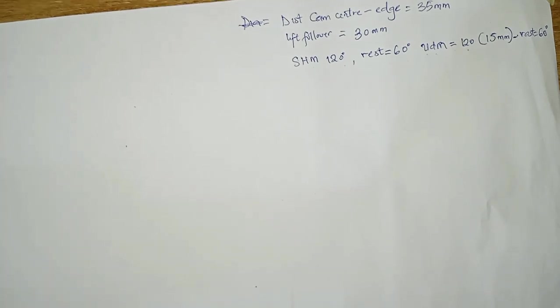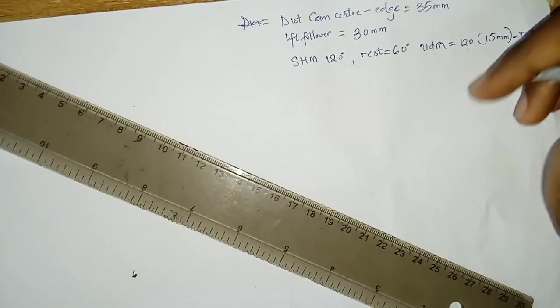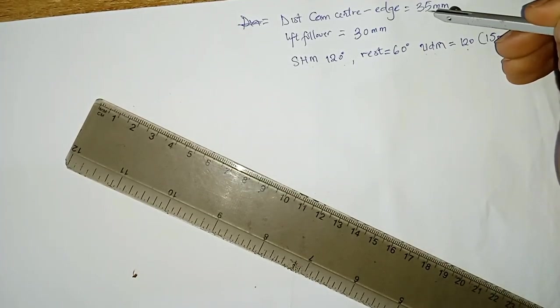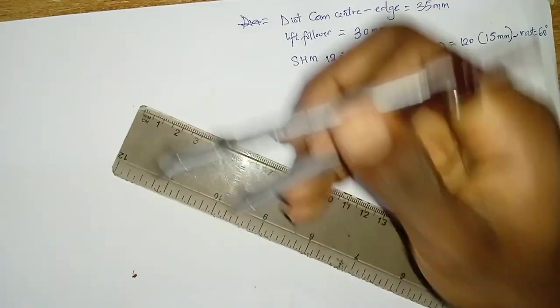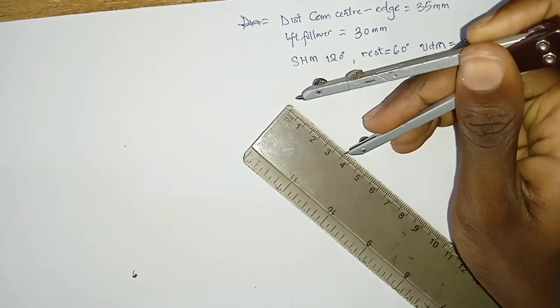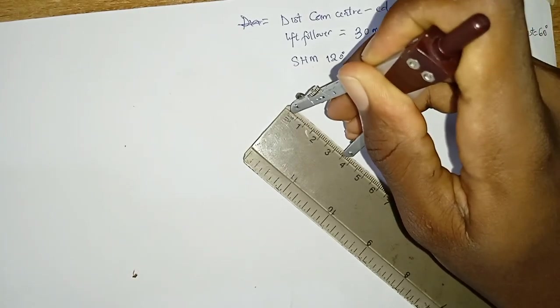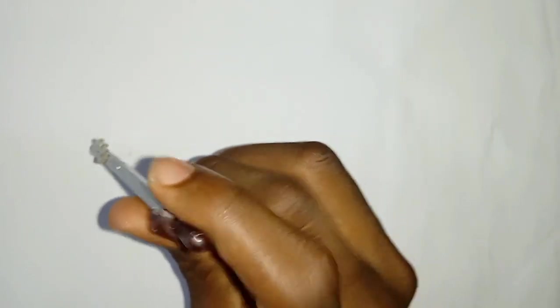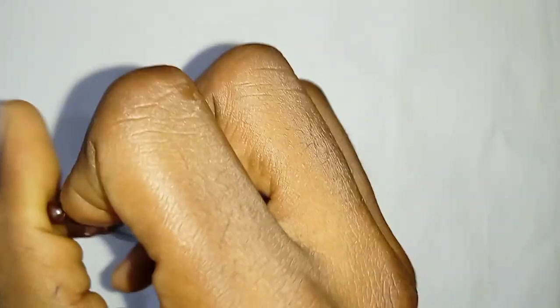Now the first thing to draw is the base circle. And the distance between the cam center to the edge is 35. That means the radius of the base circle is 35mm. So we're going to measure 35. This is always the center. Having done that, I'll mark the center points.